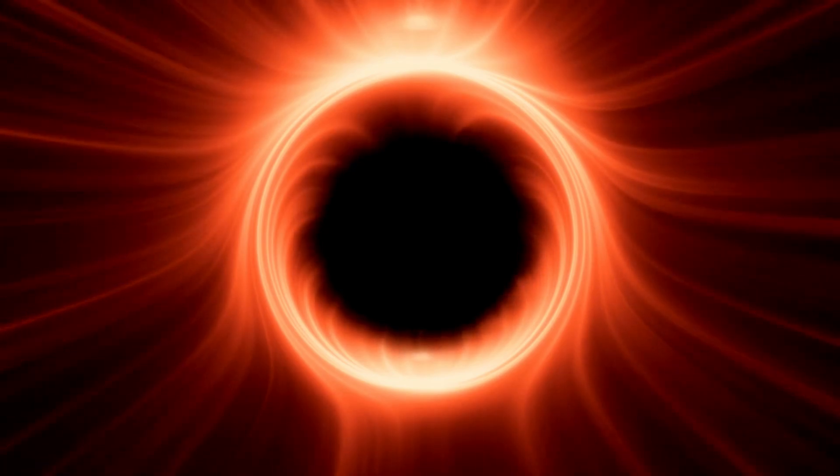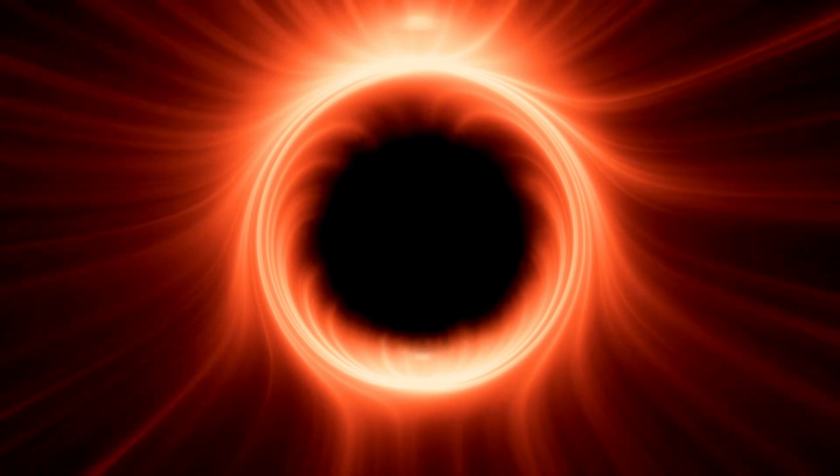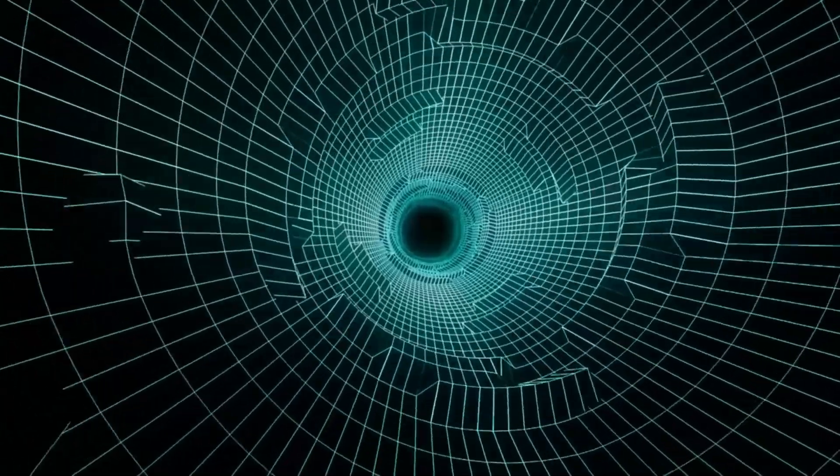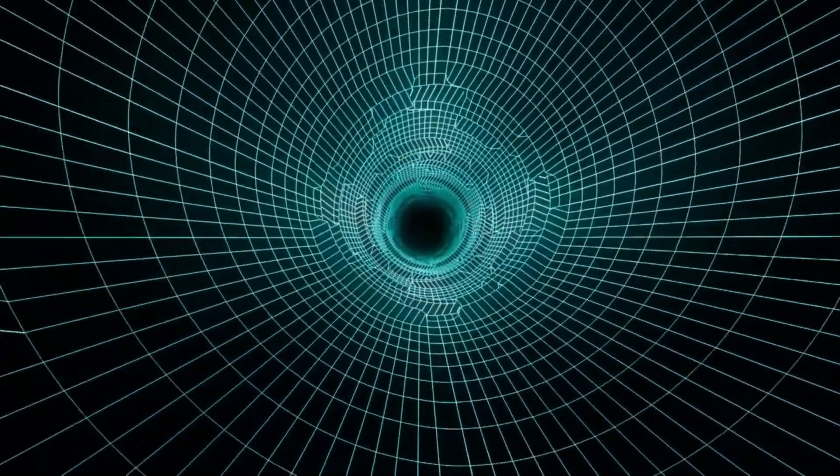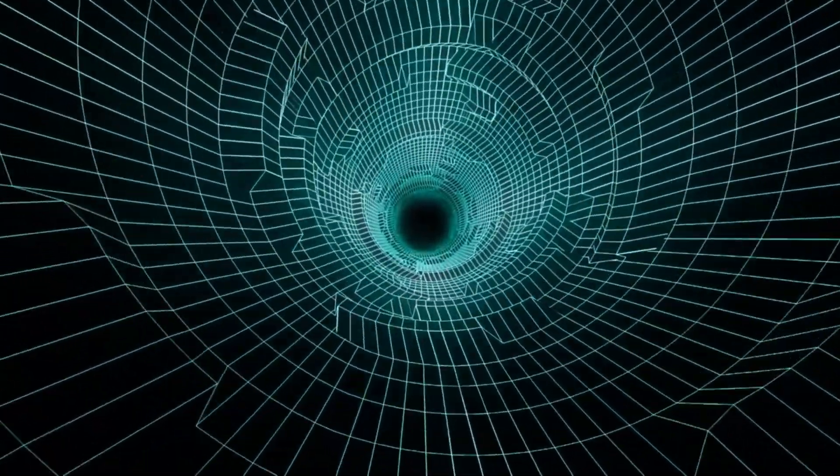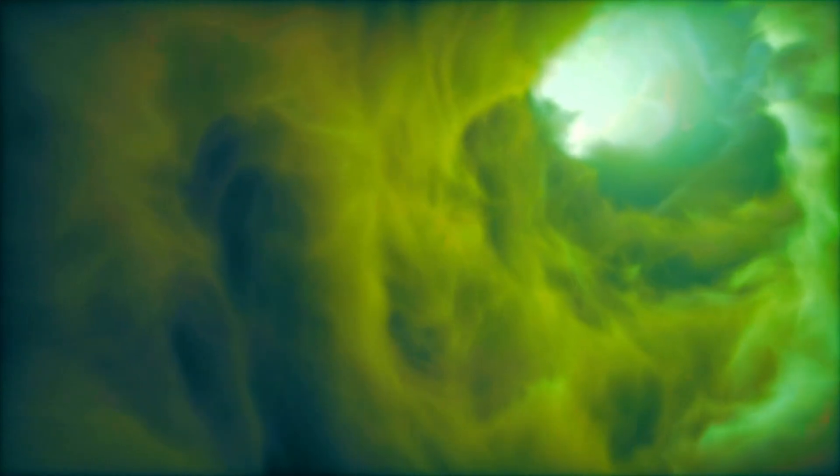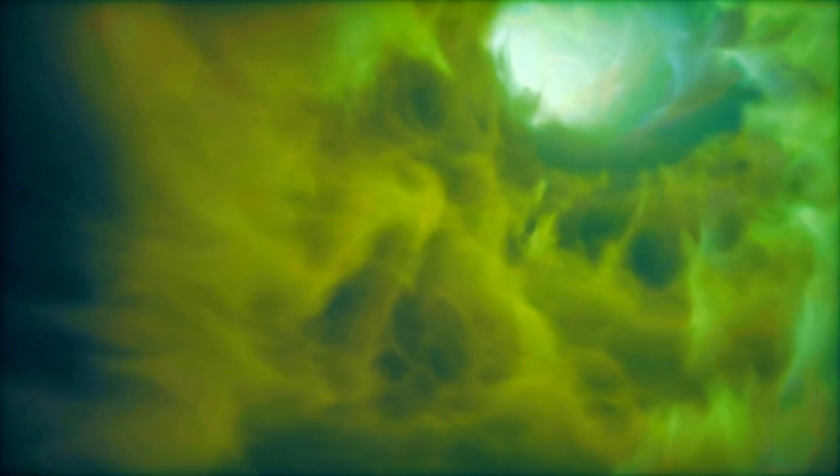As matter collapses toward the core of a black hole, space-time becomes increasingly tiny, preventing the matter from reaching an infinitely dense singularity. Instead, the collapsing matter encounters a quantum bounce near the core, where it rebounds and begins to expand. This leads to the formation of a new space-time region inside the black hole, sometimes referred to as a quantum black hole.